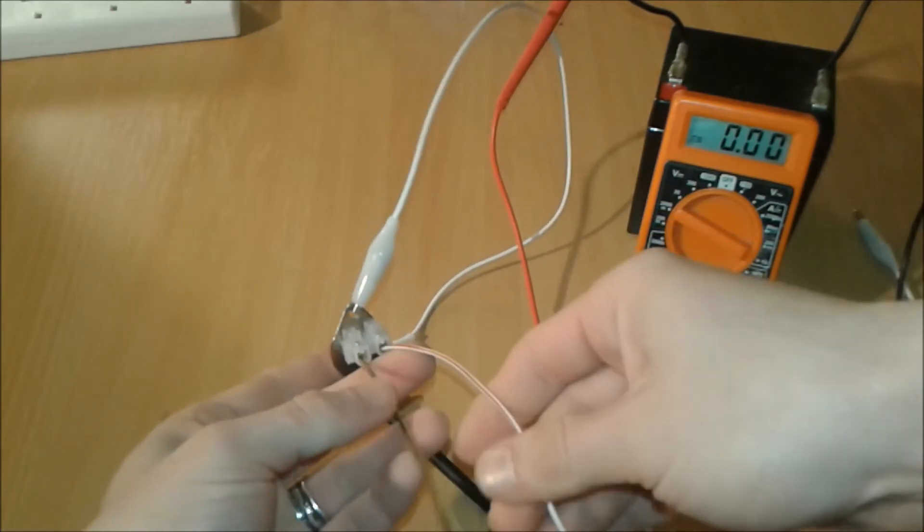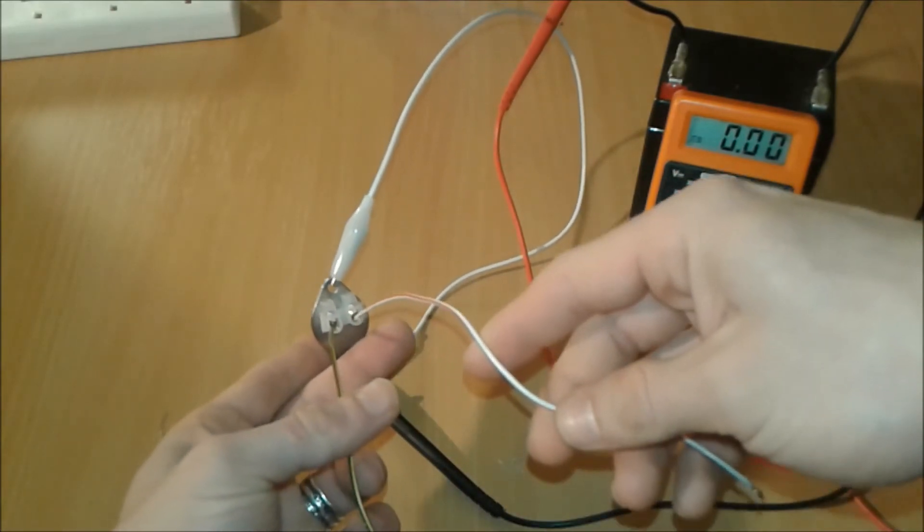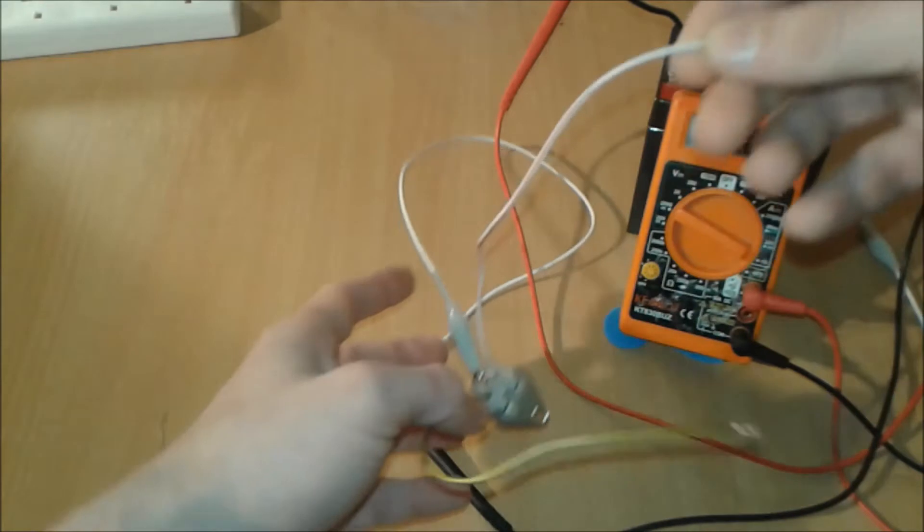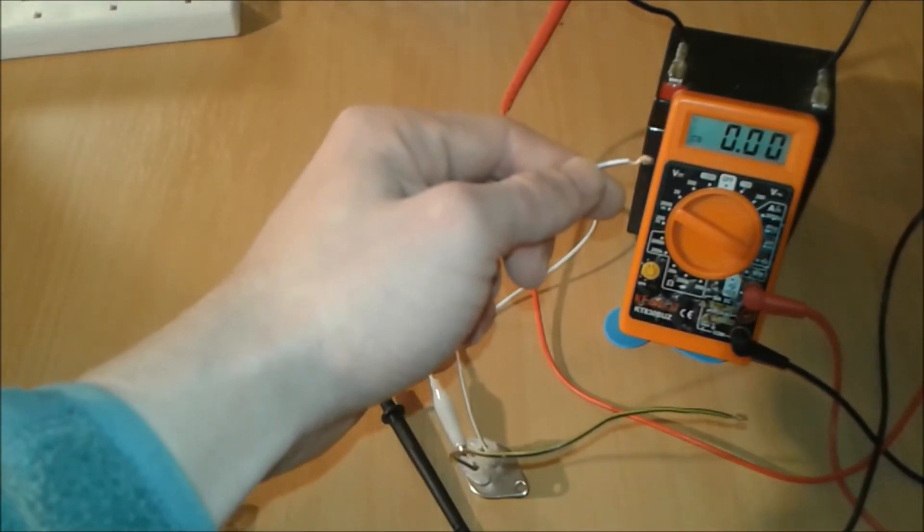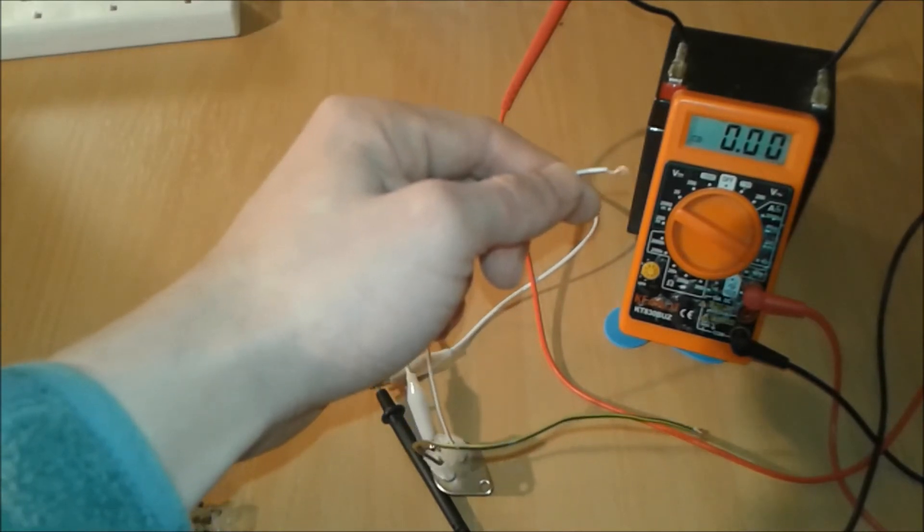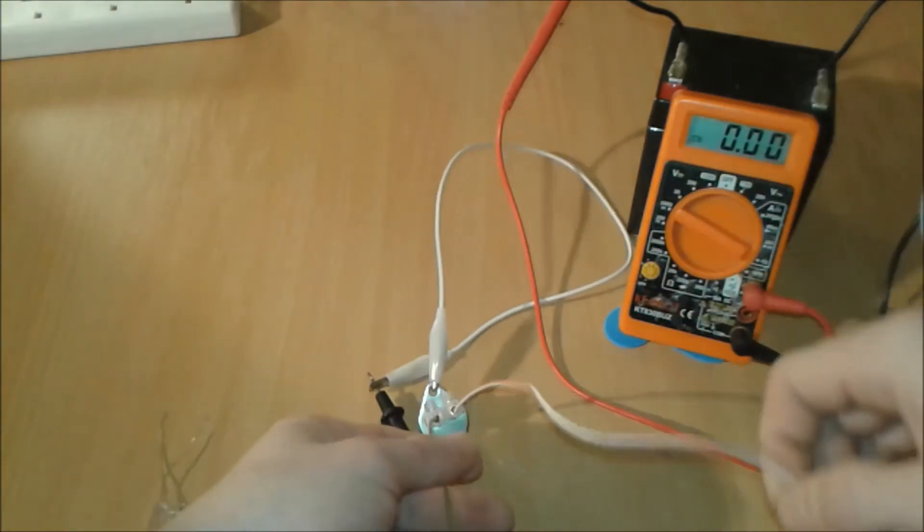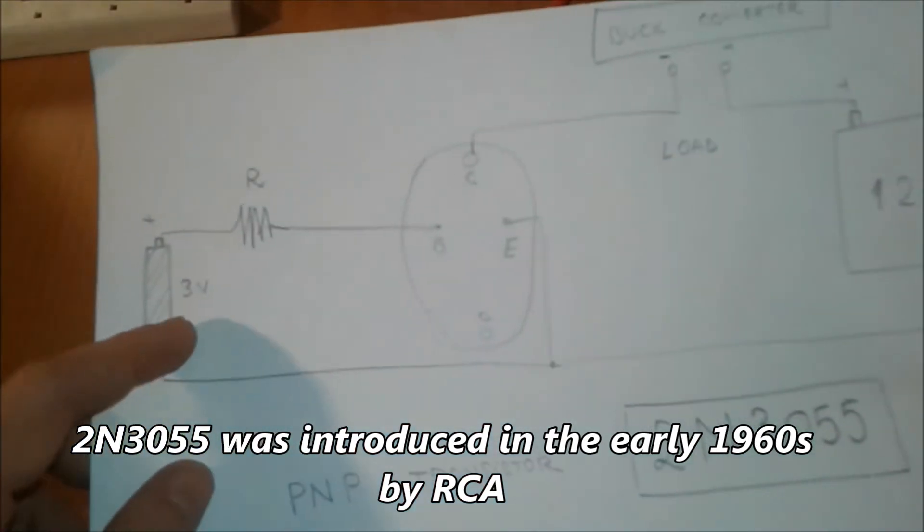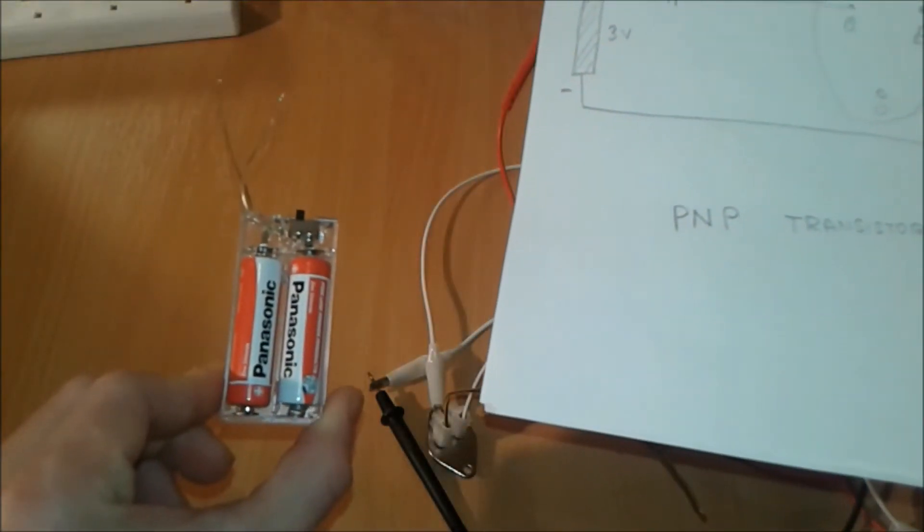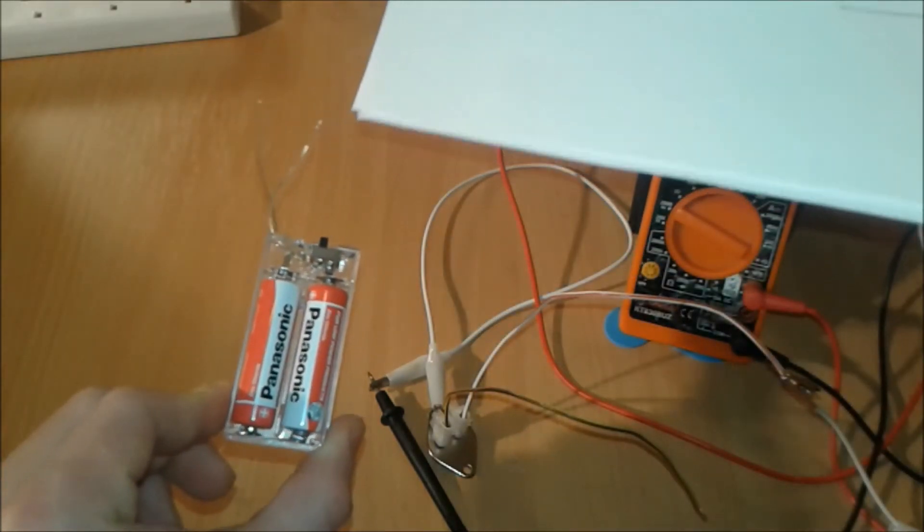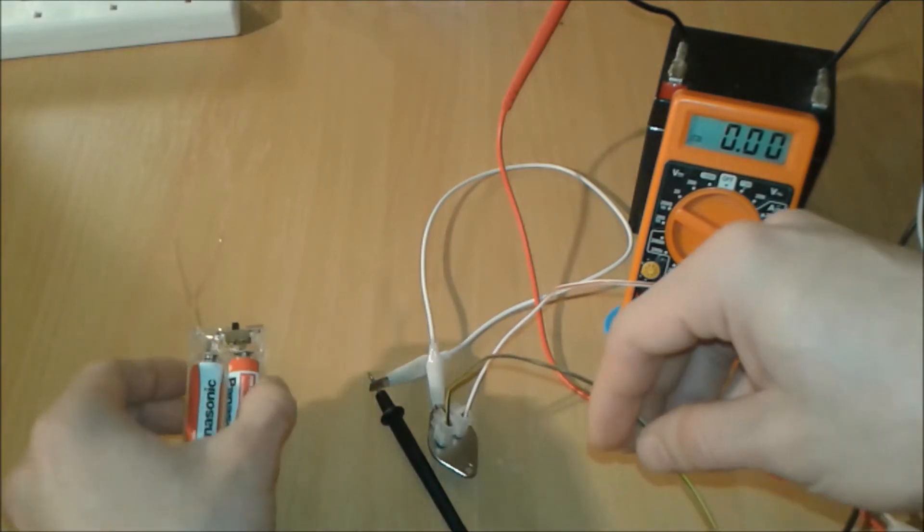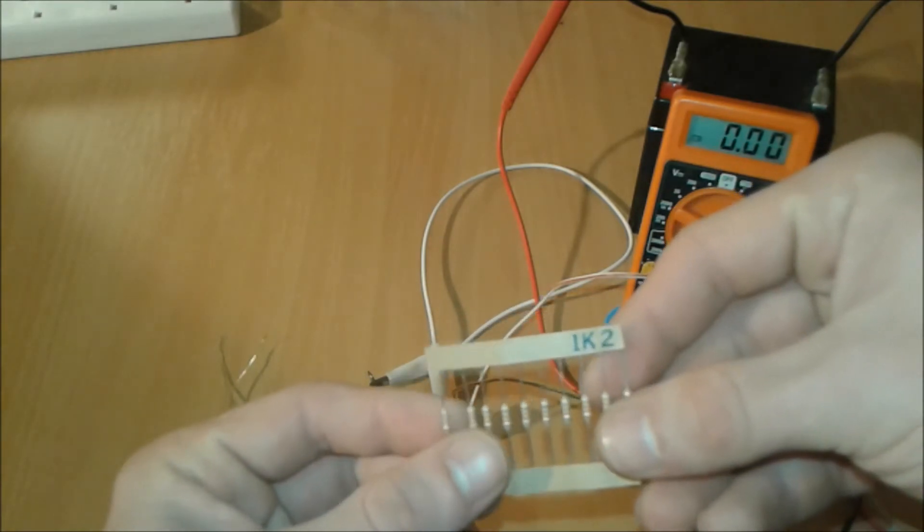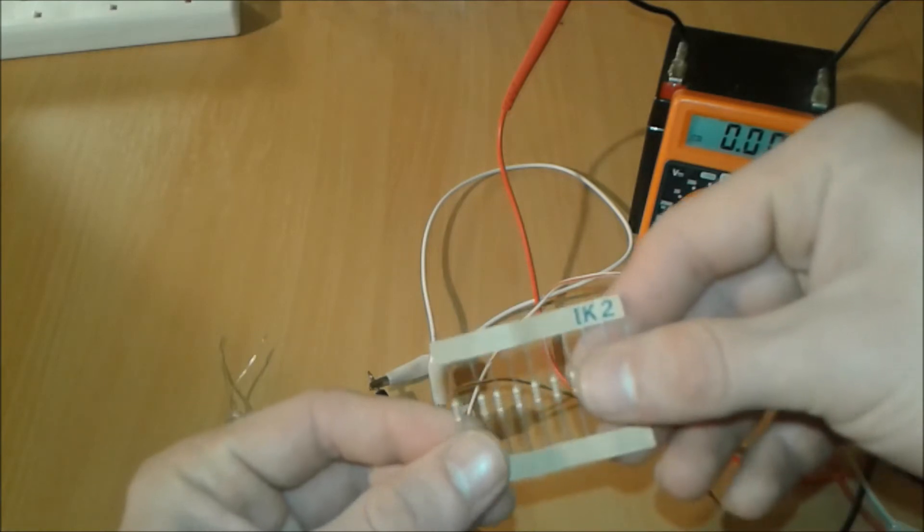After this, as the diagram says, the emitter is gonna go to the minus of the battery. We're using two batteries in series in a holder - this is the plus, this is the minus terminal. We're gonna use this resistor, which is 1.2k, meaning 1200 ohms.